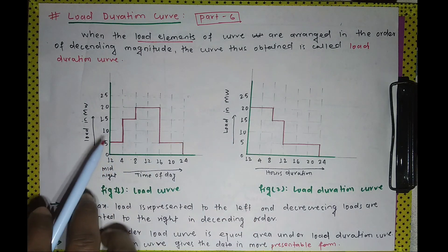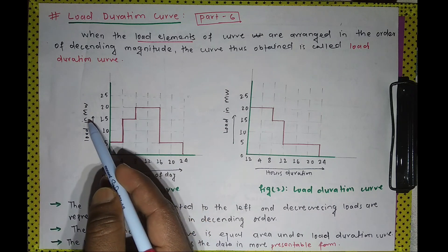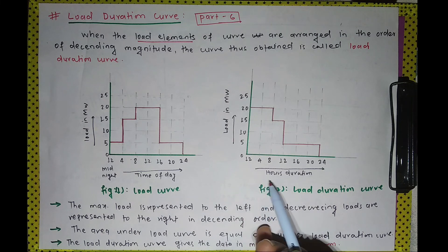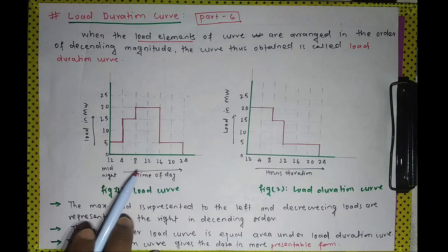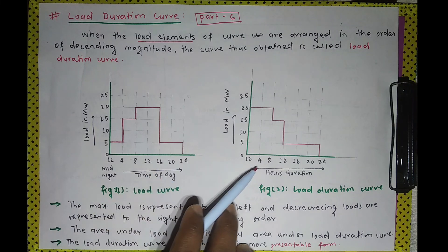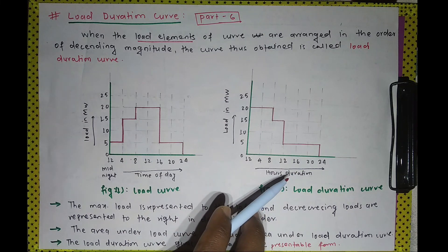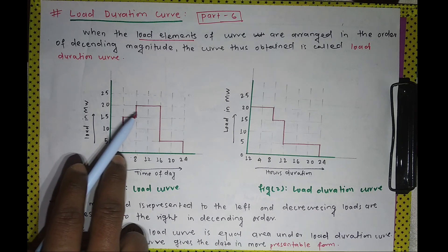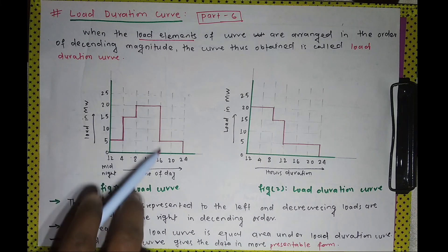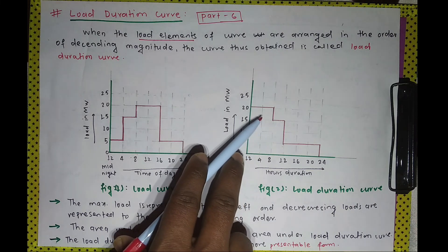First, let's see the similar points. On the Y-axis we draw load in megawatt — same in the load duration curve, we draw load in megawatt. On the X-axis there is time in hours; similarly in the load duration curve there is time in hours. Now see the difference: here the load elements are drawn randomly, not in descending order, but in the load duration curve the load elements are drawn in descending order.